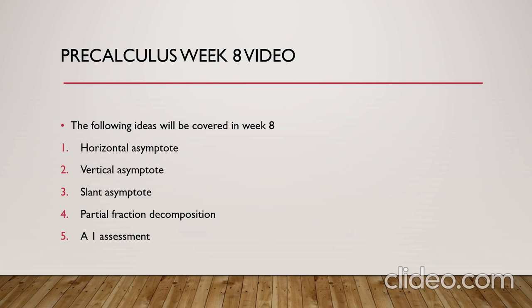The third and final asymptote we will talk about is the slant asymptote. The slant asymptote of a graph is a slant line y equals mx plus b, where the graph approaches the line as the input approaches infinity or negative infinity.